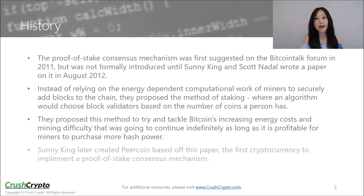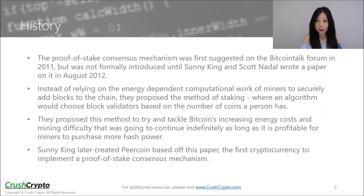One of the authors, Sunny King, later created PeerCoin based off this paper, the first cryptocurrency to implement a Proof of Stake consensus mechanism. However, it used a hybrid Proof of Work and Proof of Stake system, considering that Proof of Stake was still an unproven mechanism with security concerns.